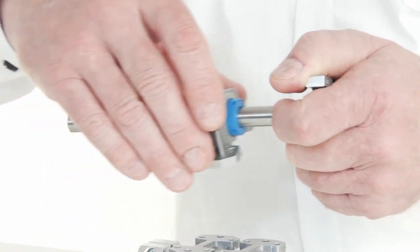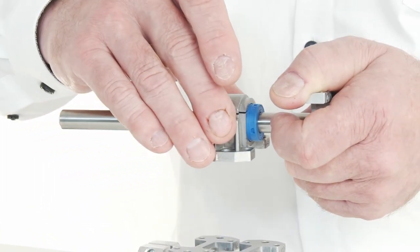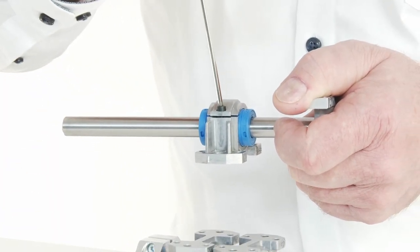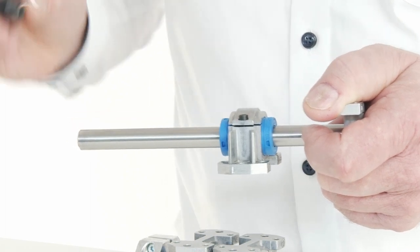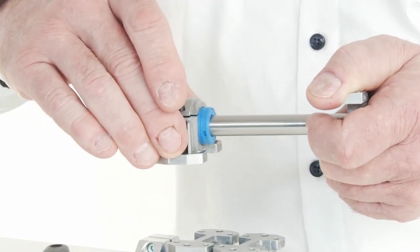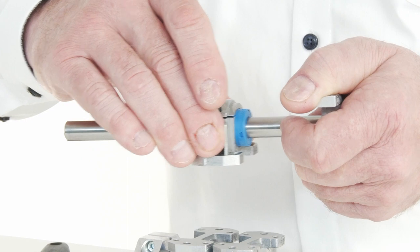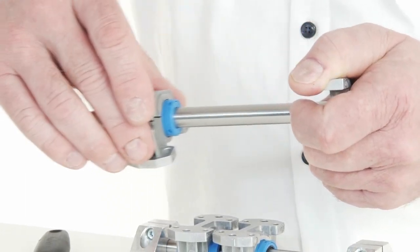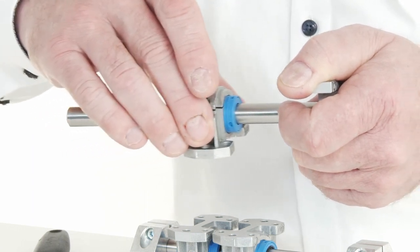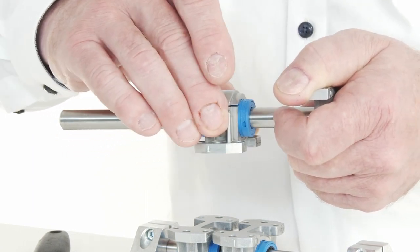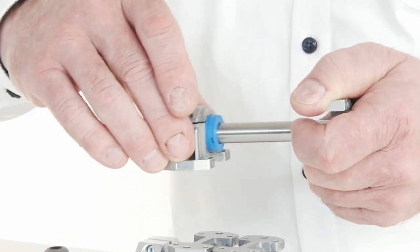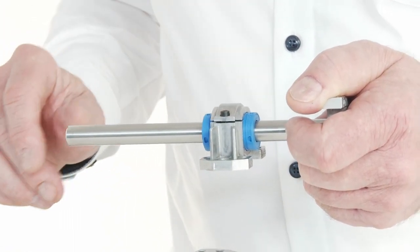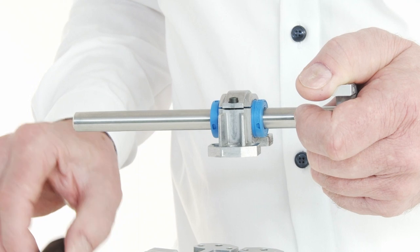I can still turn the bearing, but I feel a bigger resistance of the turning. I can even do it a bit more for finding a real preloaded function. It still can be turned around, but heavily. I would say this is a maximum point of a preloaded linear ball bearing.